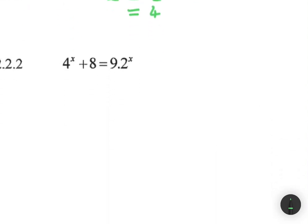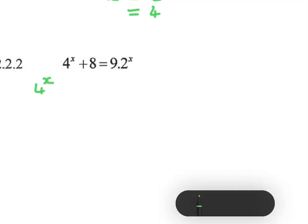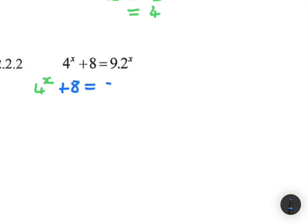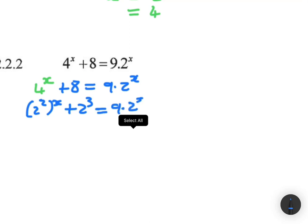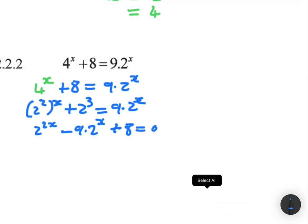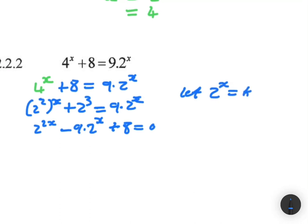Next problem: 4 to the x plus 8 equals 9 multiplied by 2 to the x. We rewrite 4 to the x as 2 squared to the x, giving 2 to the 2x. Bringing 9 times 2^x to the left gives 2 to the 2x minus 9 multiplied by 2 to the x plus 8 equals 0. We let k equal 2 to the x, giving us k squared minus 9k plus 8 equals 0.